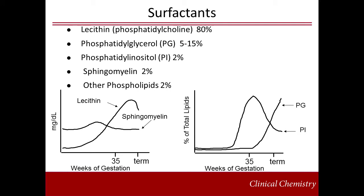This slide shows the major phospholipid surfactants involved in fetal lung maturity. These phospholipids are phosphatidylcholine, phosphatidylglycerol, phosphatidylinositol, and sphingomyelin. Over 50 years ago, it was demonstrated that measuring the phospholipids in amniotic fluid allowed accurate prediction of fetal lung maturity. Phosphatidylcholine, also known as lecithin, accounts for approximately 80% of the phospholipids present in the surfactant. Lecithin is a critical component of surfactant because it contributes the most to lowering the surface tension of the alveoli. Lecithin increases in concentration from approximately 28 weeks of gestation through birth, with peak production occurring at 36 weeks of gestation.